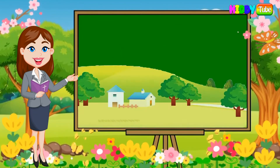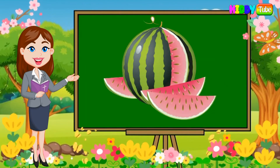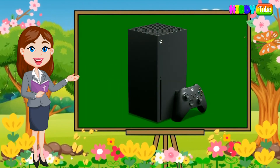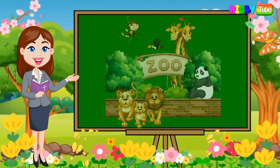V is for village, W is for watermelon, X is for Xbox, Y is for yacht, Z is for zoo.